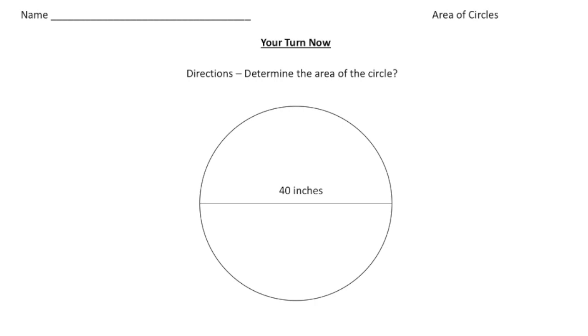Alright, welcome back. Let's say you did this practice problem. So for this circle, we know we have the diameter is 40 inches. So again, to get the radius,